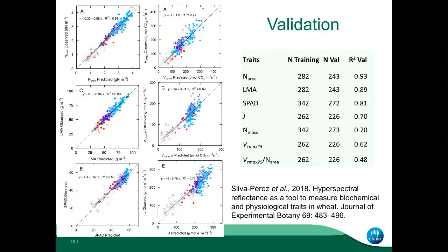So these are the results. Here are the traits, the number of training and validation data, and the R² values. The best were nitrogen and LMA. Photosynthetic traits were lower, but we were really happy with those values — mainly given the time that gas exchange takes, about 20 minutes — while reflectance will take you just about 30 seconds.